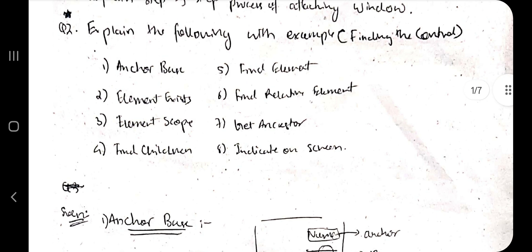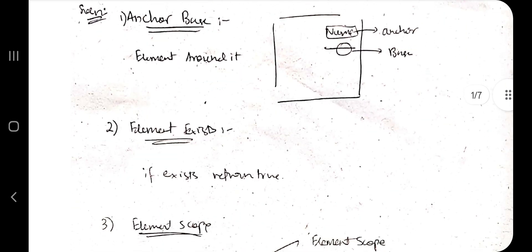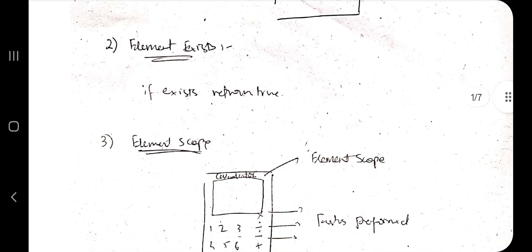Under the topic of finding controls, Anchor Base works like this: if you want to write a name, it will be written on top — that label is the anchor. You then specify where you want to write relative to it — beside it, on top, to the right, or at the bottom — and there you enter the text you want to input.